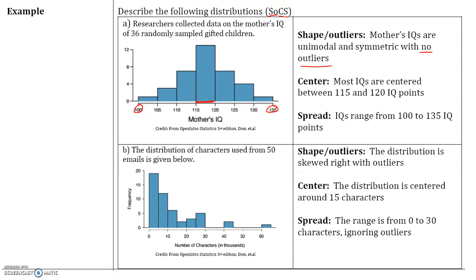Now let's describe the second distribution: the distribution of characters used from 50 emails. Most people keep their emails short — most people used less than 20 characters. If you look at this, there is a right tail, so if this were an animal, the tail is to the right. That means it's skewed right, because most of the values are to the left. So the distribution is skewed right with two potential outliers. The center, discounting the outliers, looks to be right about 15 characters. Remember to always include units.